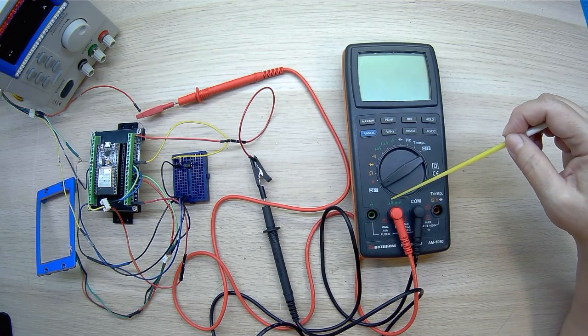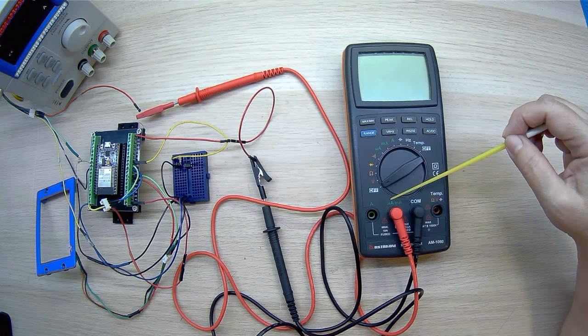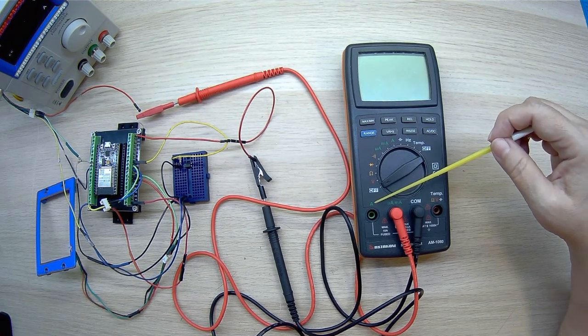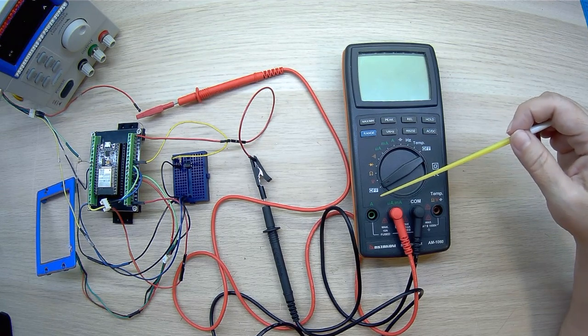Our multimeter has two sockets for measuring current. The first is for small currents, microamps and milliamps, and the second is for currents up to 10 amps.